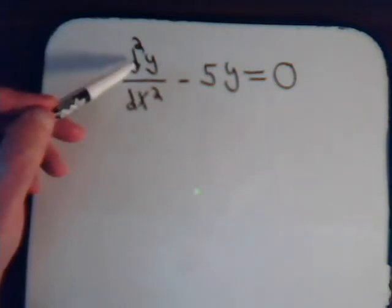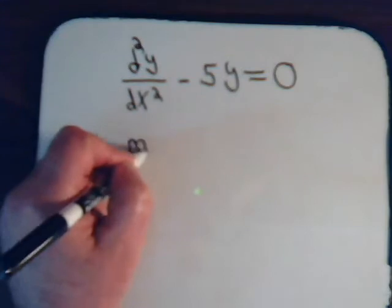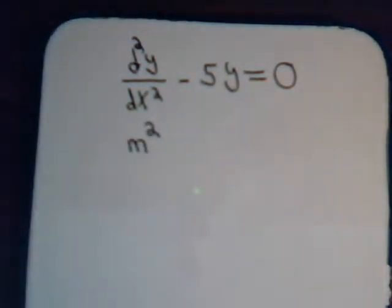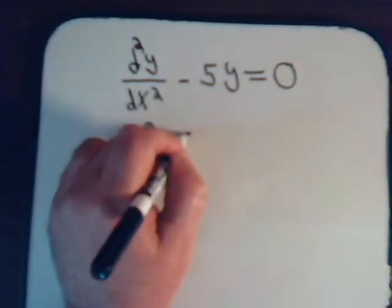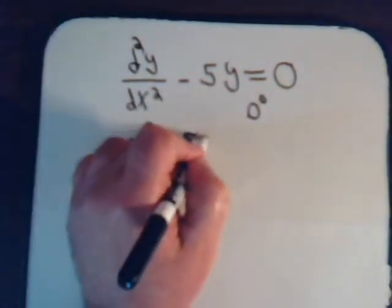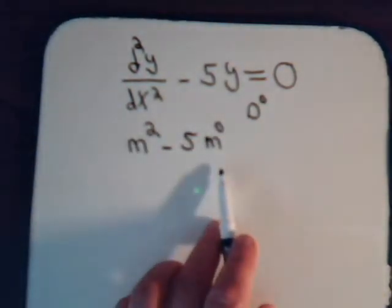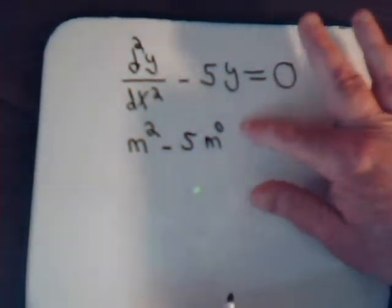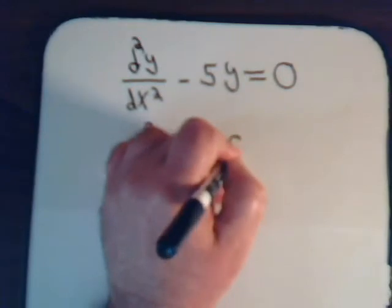Here we have a second order derivative, so we replace that with m raised to the second power minus 5. And here there is no derivative, so we think of it as a differential operator to the zero power — m to the zero power — which of course is just 1. So there's the auxiliary equation.